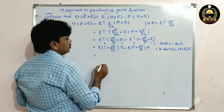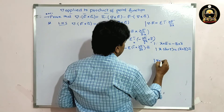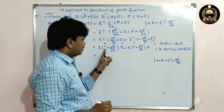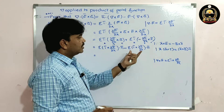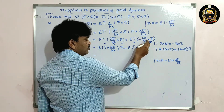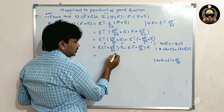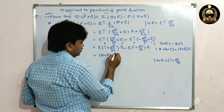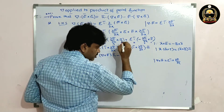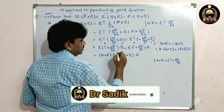Now, the basic definition: sigma i-bar cross dou f-bar by dou x is del cross f-bar. So the first term becomes del cross f-bar dot g-bar. Minus: sigma i-bar cross dou g-bar by dou x is del cross g-bar, so the second term becomes del cross g-bar dot f-bar.